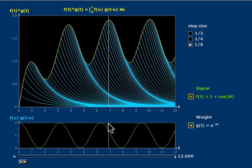Now imagine shrinking the step size. In the limit, as the step size goes to zero, this process is described by the convolution integral.